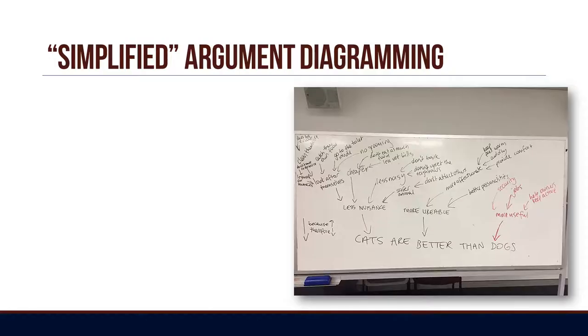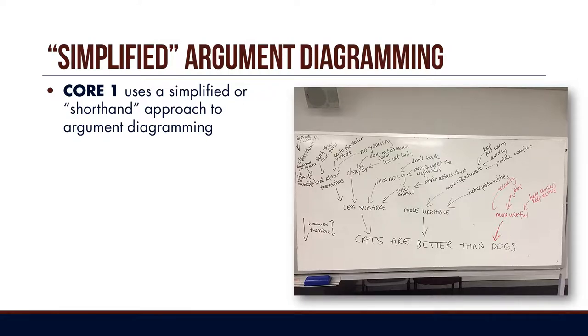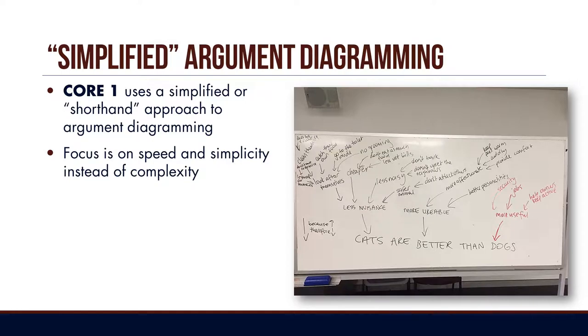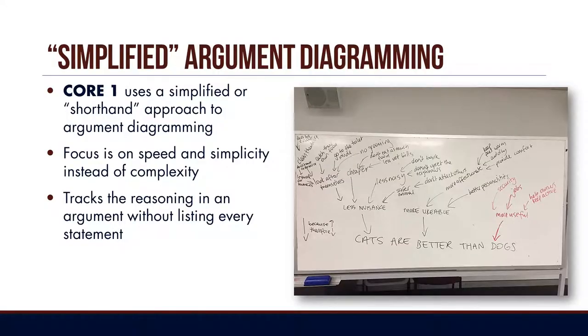In Core 1, the type of argument diagramming we use is simplified. Here's an example of what students have created in class. We use a shorthand approach to argument diagramming. Rather than focusing on completeness and coherence, we're after speed and simplicity — we want students to be able to get an idea of what they think very, very quickly. Instead of going through every single proposition in an argument, we skip a few, and in doing so we make things a lot quicker.